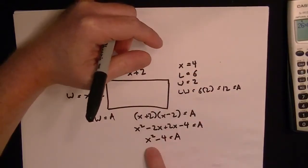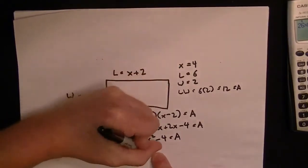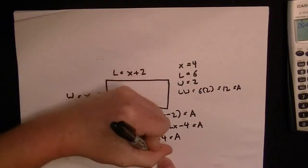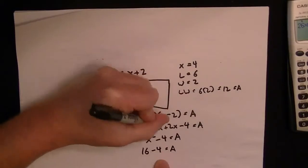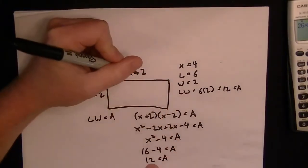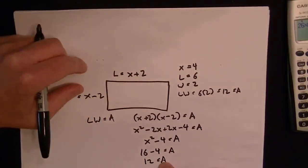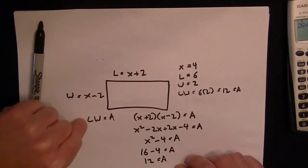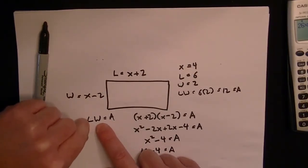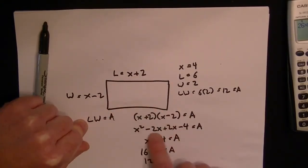Now we can try out the formula. If x is equal to 4, x squared gives us 16, and 16 minus 4 is equal to 12. So we get 12 for the area both ways. This formula works out well. You just substitute in the length and width expressions and work through the math to get x squared minus 4.